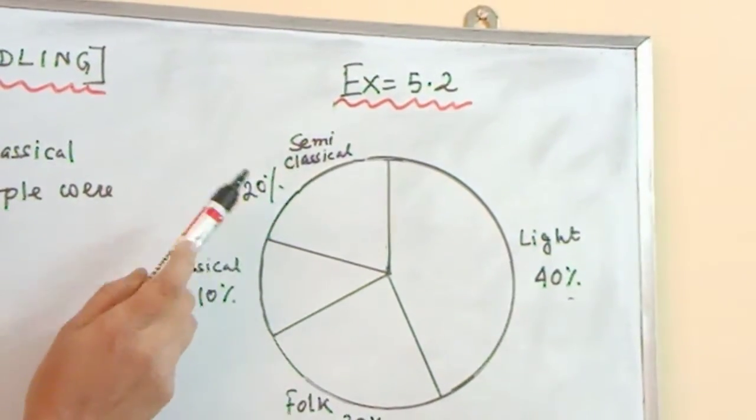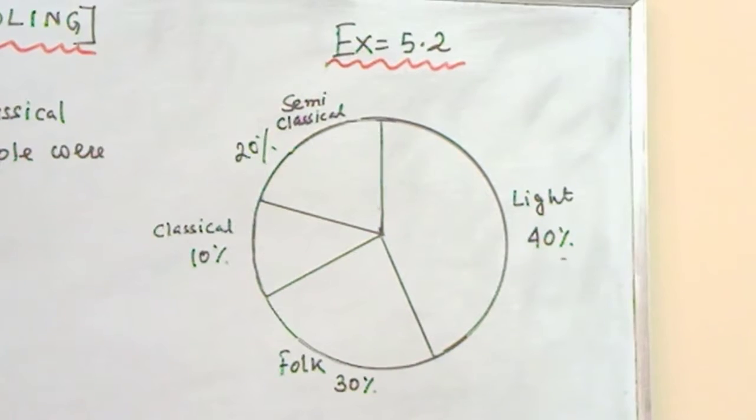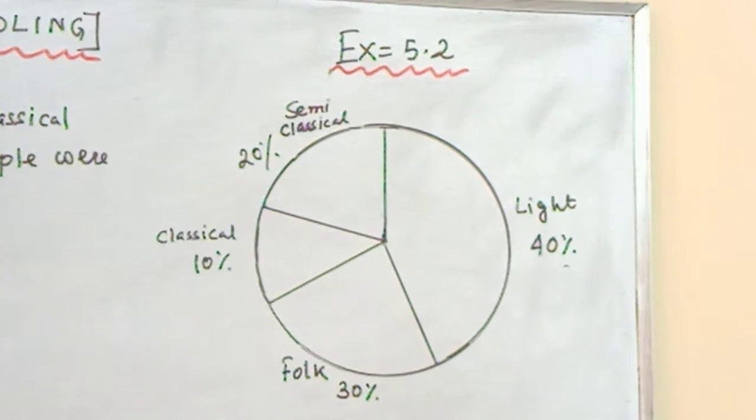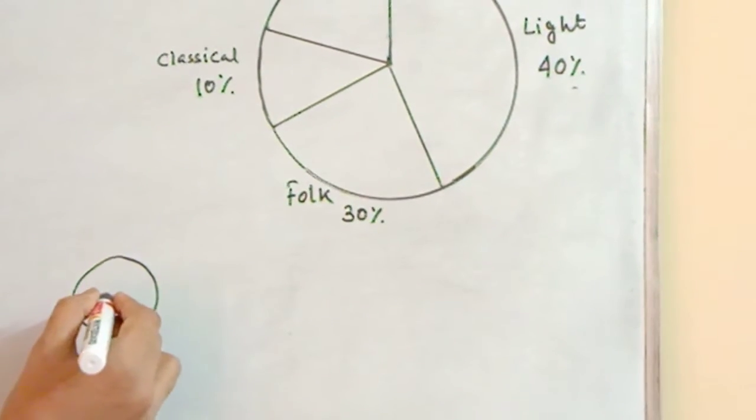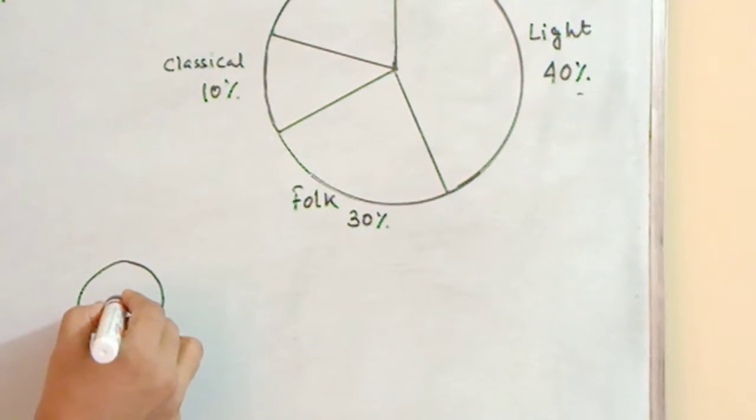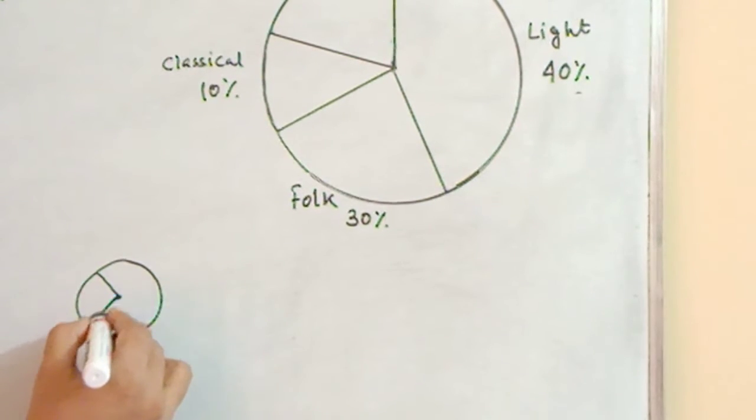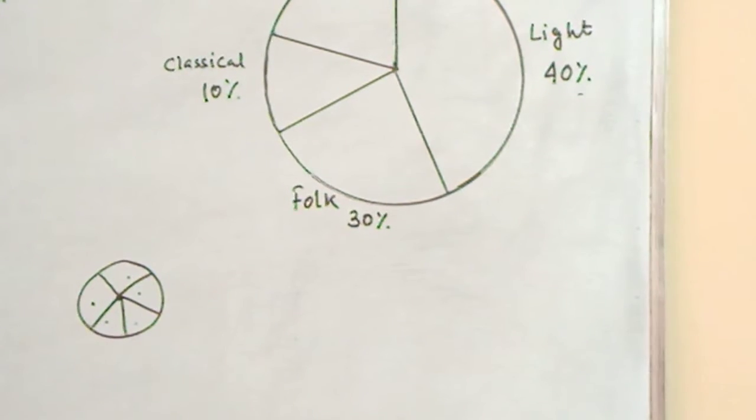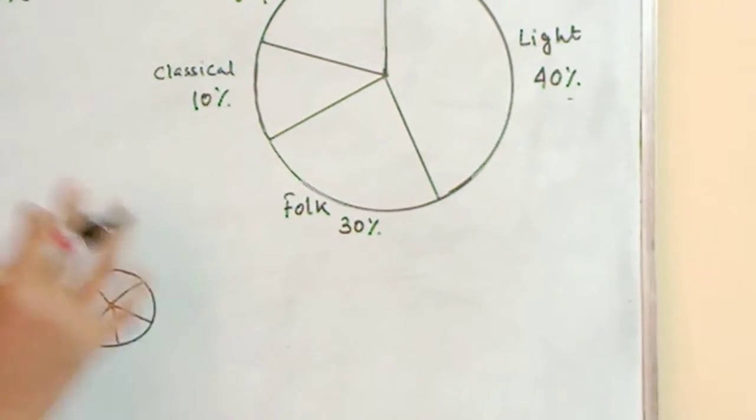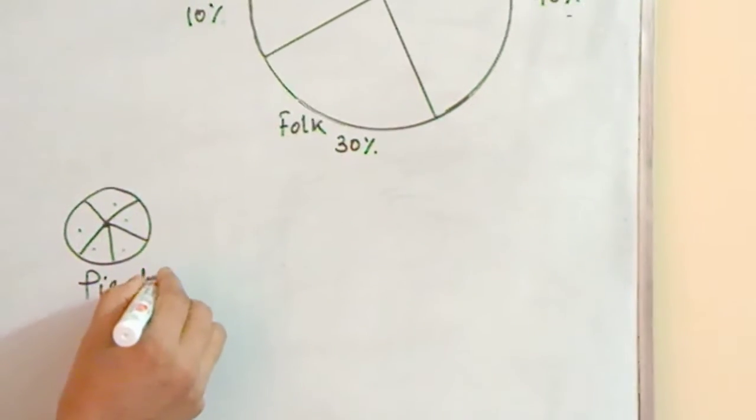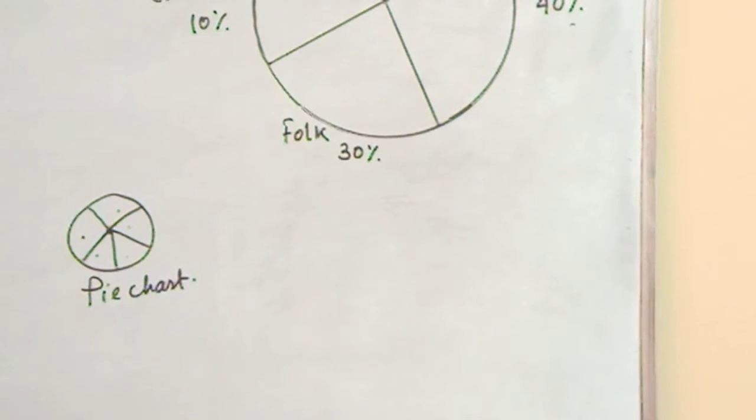Now we will start pie chart from exercise 5.2. What is a pie chart? The data when expressed in a circular graph is known as a pie chart. It is also known as a circle graph. When we express the data in the form of 360 degrees, converting it into 360 degree angles, whatever data we are getting, say 3, 4, 5 types of data, we are expressing it in a circular graph known as a pie chart.